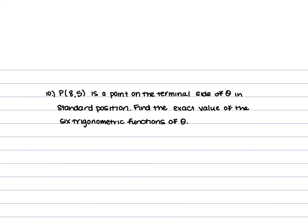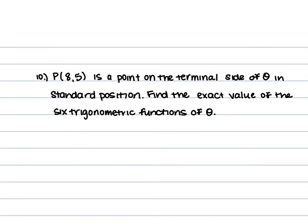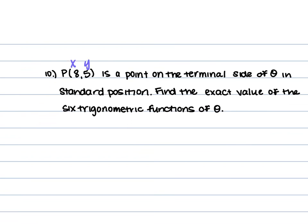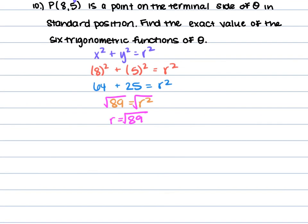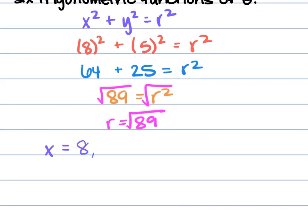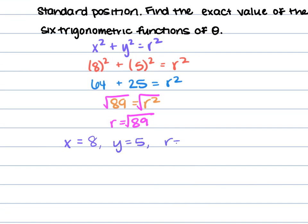For problem 10, (8, 5) is a point on the terminal side of theta in standard position. Find the exact value of the six trig functions of theta. So x = 8, y = 5. We find r using x² + y² = r²: 8² + 5² = 64 + 25 = 89, so r = √89. Write down x = 8, y = 5, r = √89.